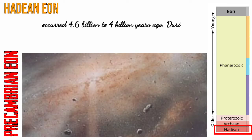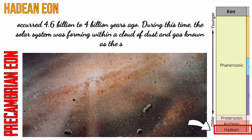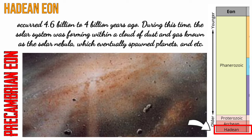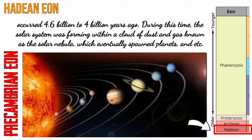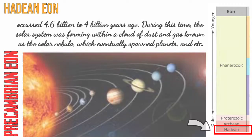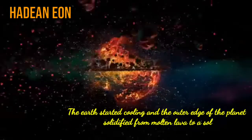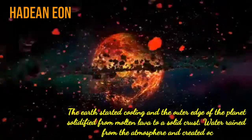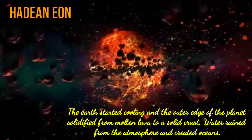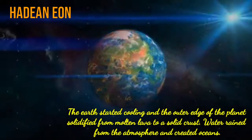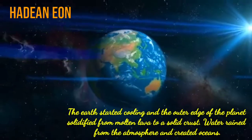The Hadean eon occurred 4.6 billion to 4 billion years ago. During this time, the solar system was forming within a cloud of gas and dust known as the solar nebula, which eventually spawned planets, moons, and more. The Earth started cooling and the outer edge of the planet solidified from molten lava to a solid crust. Water rained from the atmosphere and created oceans.